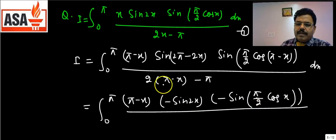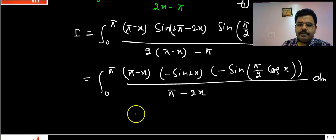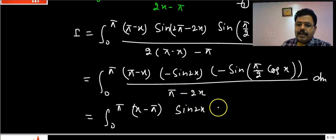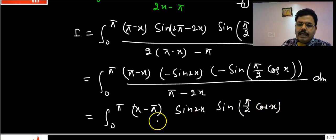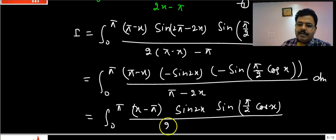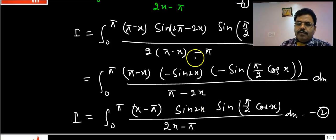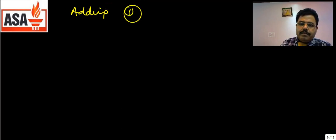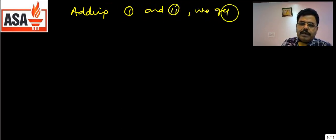After substitution the denominator 2x−π becomes π−2x = −(2x−π). The two negatives in numerator give a positive, and the denominator sign flips as well. This gives equation 2. Adding equations 1 and 2: the denominators are the same (2x−π), and the numerators combine to give x + (π−x) = π. So 2I = ∫₀^π π·sin2x·sin(π/2·cosx)/(2x−π) dx.